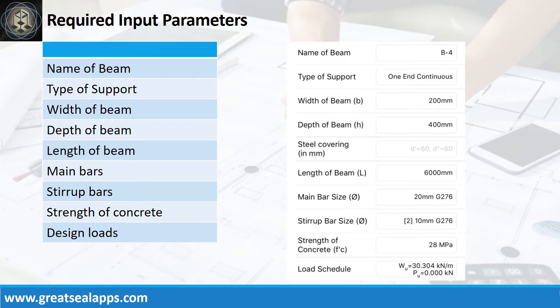Enumerating input parameters: name of beam is B4; type of support is one end continuous; width of beam is 200 mm; depth of beam is 400 mm; length of beam is 6000 mm; main bars are 20 mm bar at grade 276; stirrup bars are 10 mm bar at grade 276; strength of concrete is 28 MPa; and factored uniform load is 30.304 kN per meter.